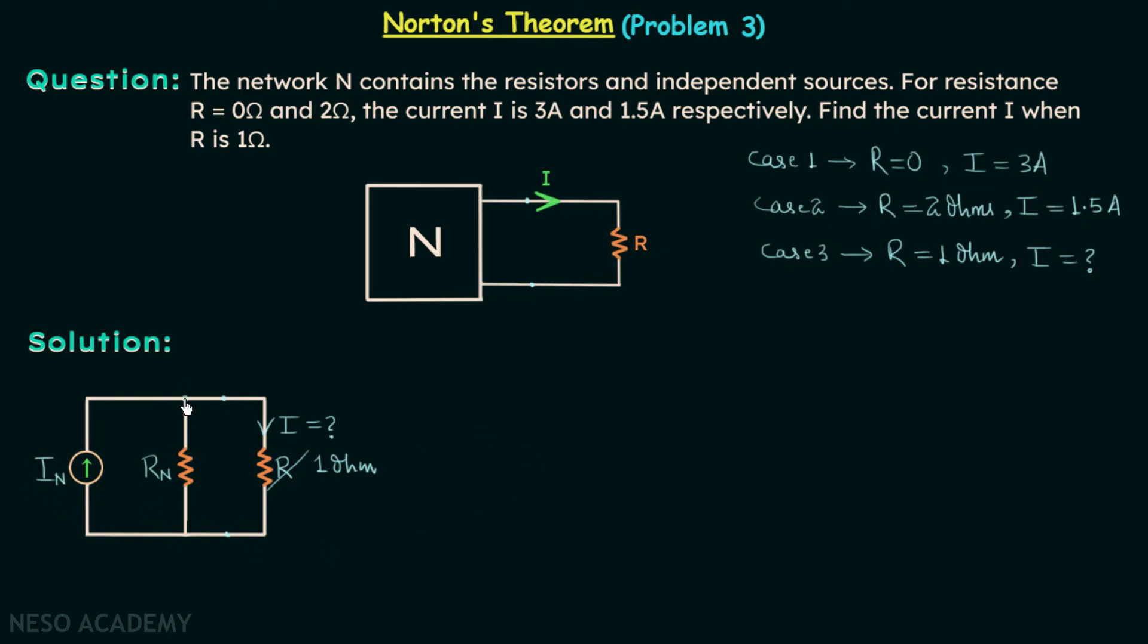At this node, In is getting divided and one divided current of In is I. So I, with the help of current divider rule, is equal to In multiplied by Rn divided by Rn plus R. This is equation number 1.